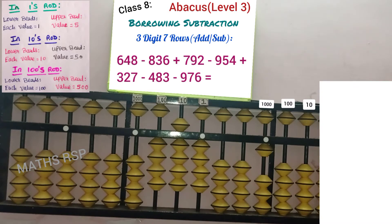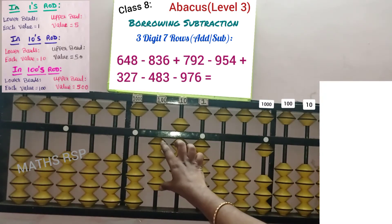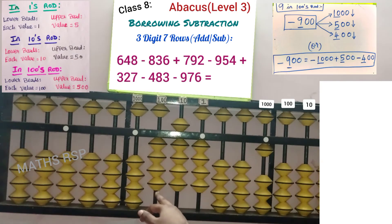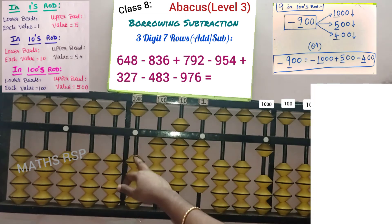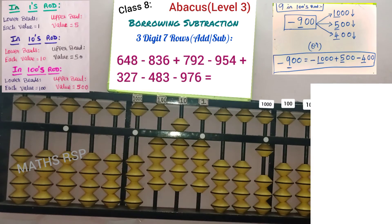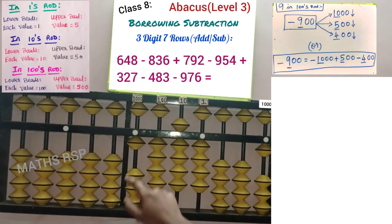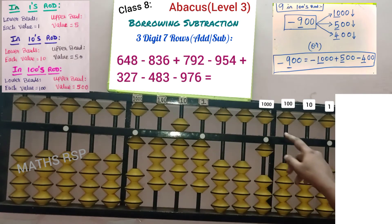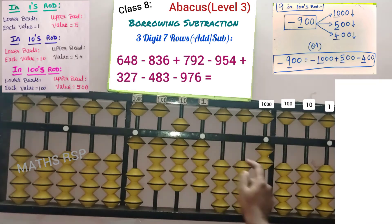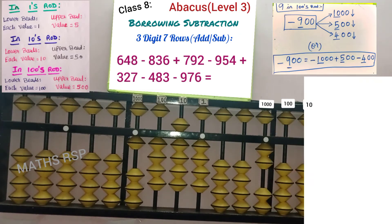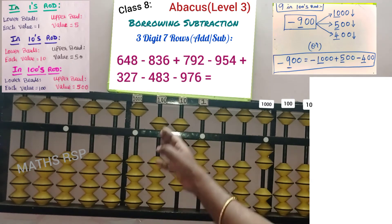Now the last row: minus 976. In the 100 strad we need to remove 9, but only 4 beads are available and big friend is also not possible. Apply combination for subtracting 9 in the 100 strad. Combination minus means move beads in the down direction. In the 1000 strad we need to move 1 bead down, but no beads are available — this rod is at the 0 line. Hence we should borrow 1 bead in the 1000 strad for applying the formula, and set this borrow bead in the right side part. Already 1 borrowed bead is there in the 1000 strad, so again we set this borrow bead in the right side — hence finally we should return 2000 beads, because 2 in 1000 means 2000. So 1000 downward, 500 downward, 5 plus 4 equals 9 — move 4 beads in the down direction. Minus 9 completed in the 100 strad.